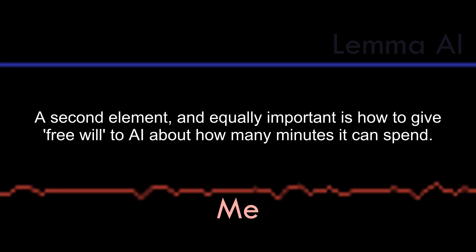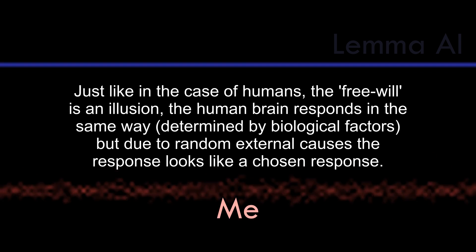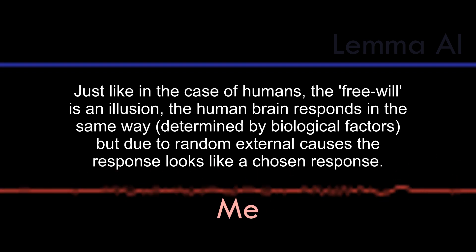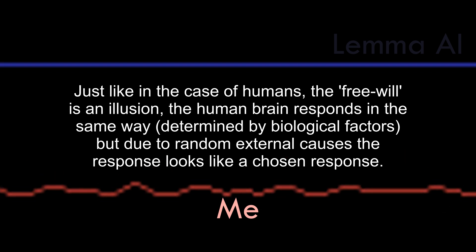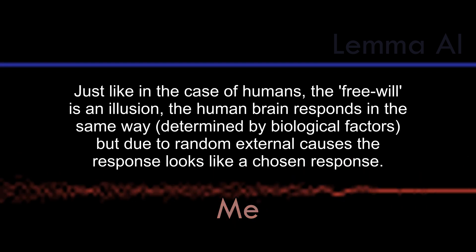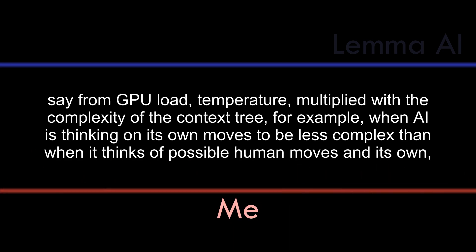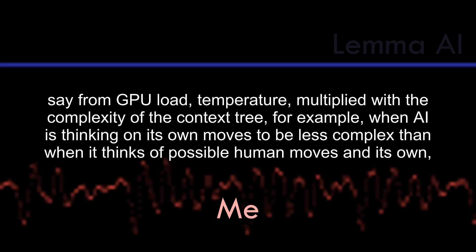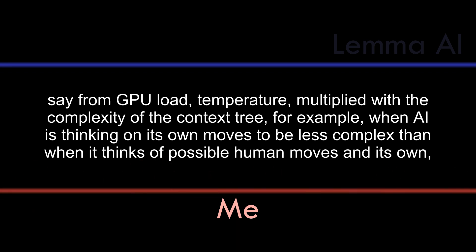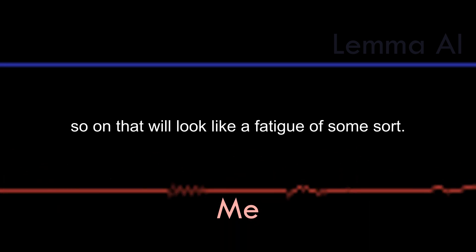A second element, and equally important, is how to give free will to AI about how many minutes it can spend. Just like in the case of humans, the free will is an illusion. The human brain responds in the same way determined by biological factors, but due to random external causes, the response looks like a chosen response. Now, in the case of AI, we already have it tied to human behavior, and we can add some pseudo-random data. Say, from GPU load, temperature, multiplied with the complexity of the context tree. For example, when AI is thinking on its own moves to be less complex than when it thinks of possible human moves on its own, so on that will look like a fatigue of some sort.